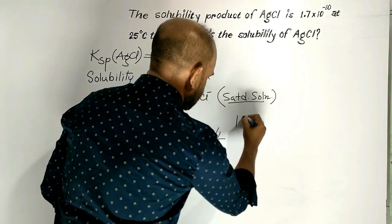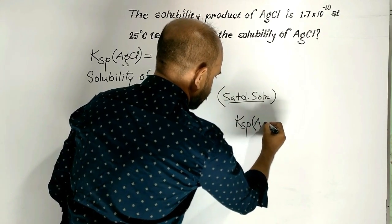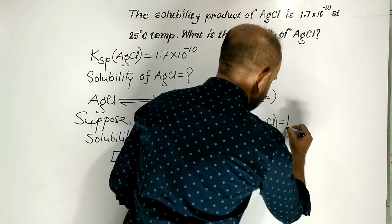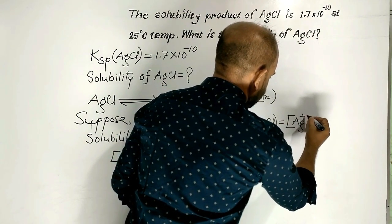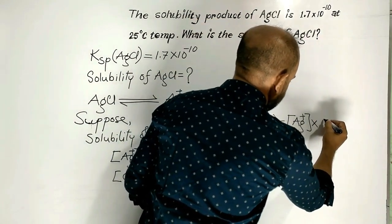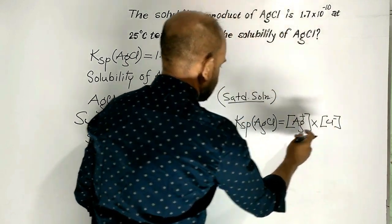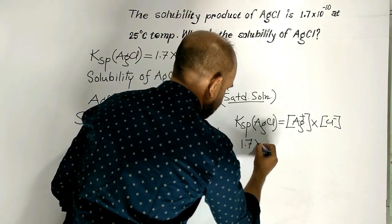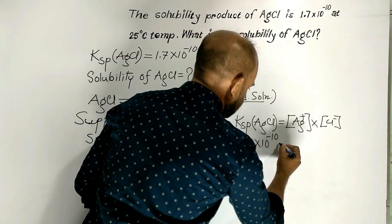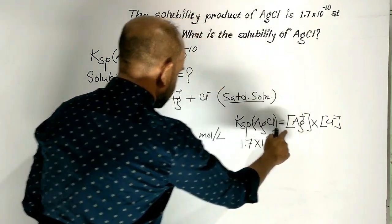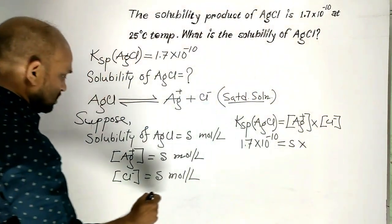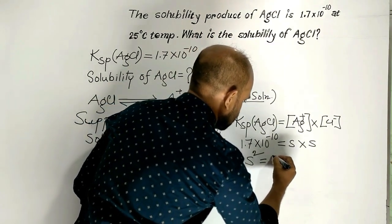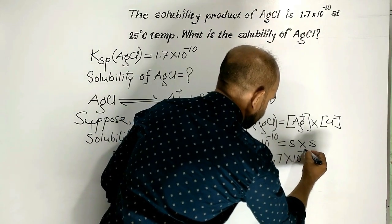Now, the solubility product of silver chloride can be written as the product of the concentrations of the products — that is, the concentration of silver ion times the concentration of chloride ion. The solubility product of silver chloride has been given as 1.7 times 10 to the power minus 10, which equals the concentration of silver ion S times the concentration of chloride ion S, giving us S squared equals 1.7 times 10 to the power minus 10.